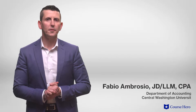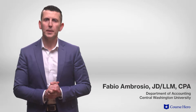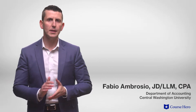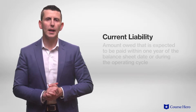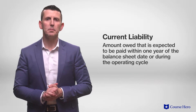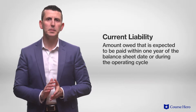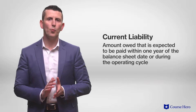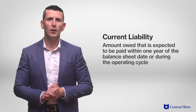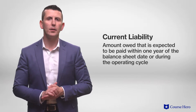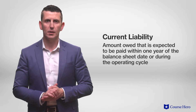Current liabilities are formed when a company buys goods and services on credit or receives short-term loans. A current liability is an amount owed that is expected to be paid within one year of the balance sheet date or during the operating cycle, whichever is longer.